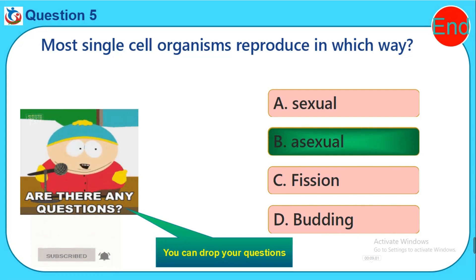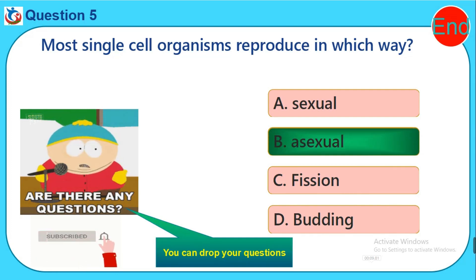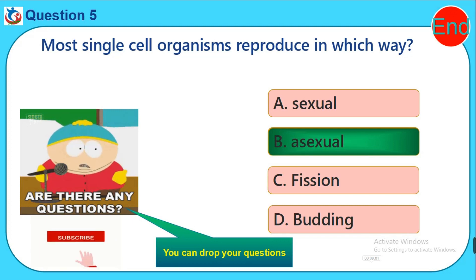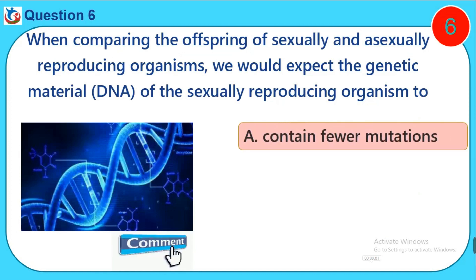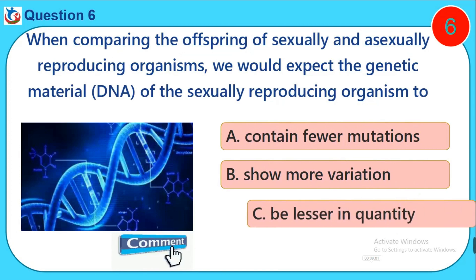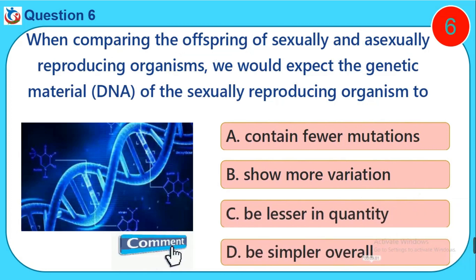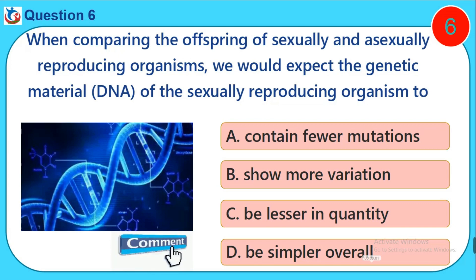Please like this video, subscribe to this channel, and click the bell button — it's totally free. Do not forget to drop your comment in the comment section. Question six: When comparing the offspring of sexually and asexually reproducing organisms, we would expect the genetic material of the sexually reproducing organism to: A) Contain fewer mutations, B) Show more variation, C) Be lesser in quantity, D) Be simpler overall.